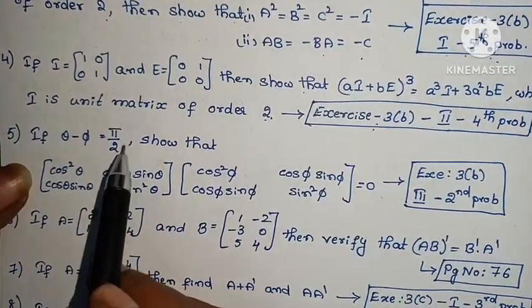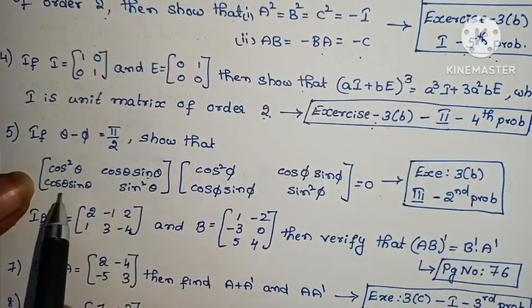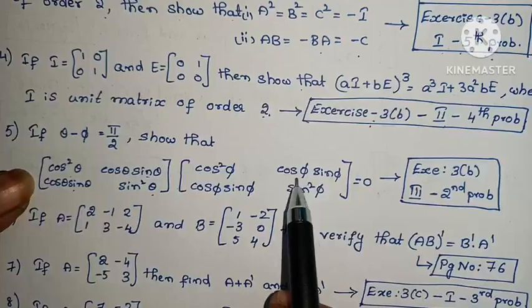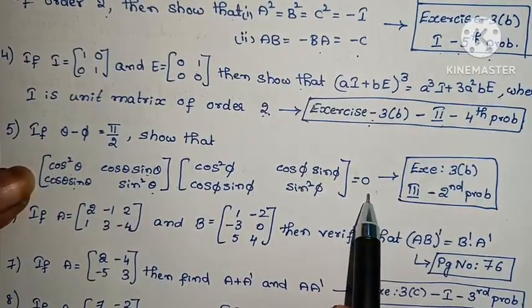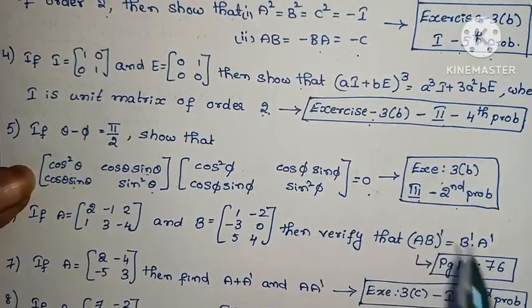Fifth one: if θ - φ = π/2, show that [cos²θ, cos θ sin θ; cos θ sin θ, sin²θ] into [cos²φ, cos φ sin φ; cos φ sin φ, sin²φ] is equals to 0. Exercise 3(b), third roman, second problem.